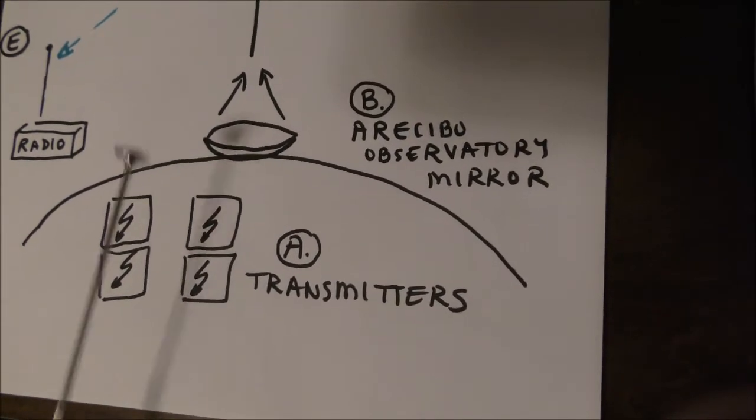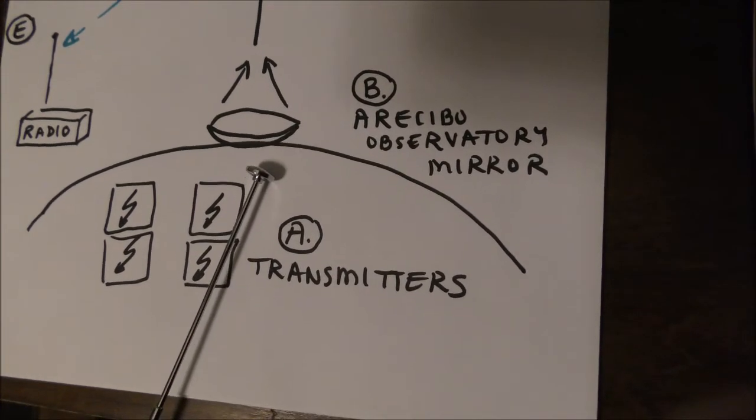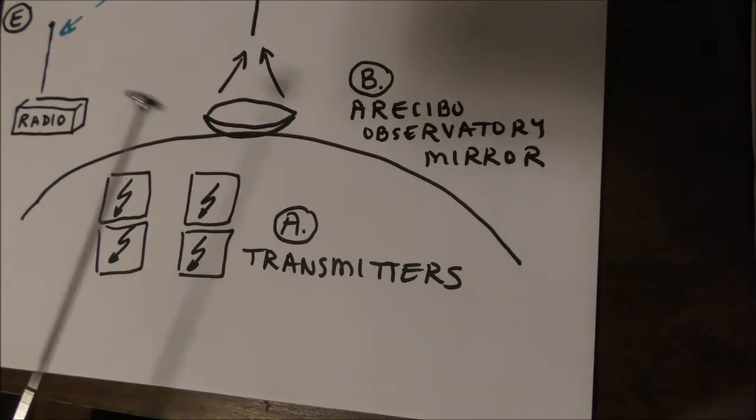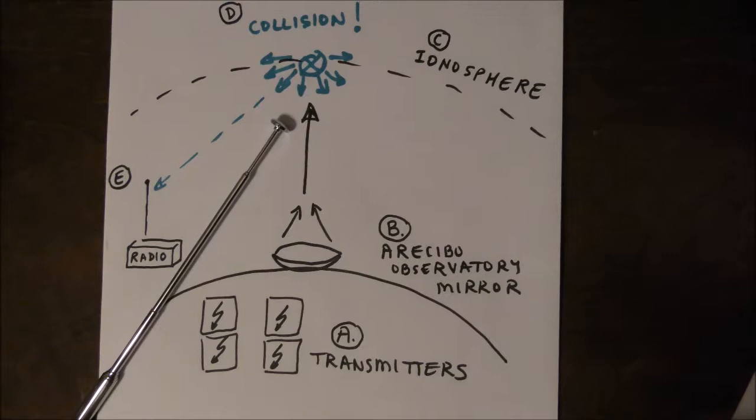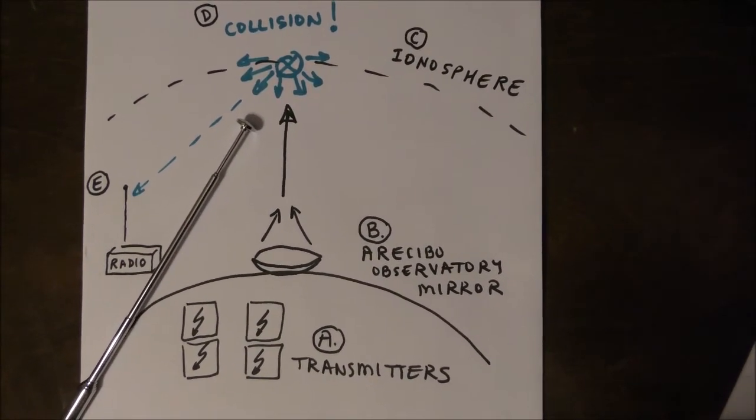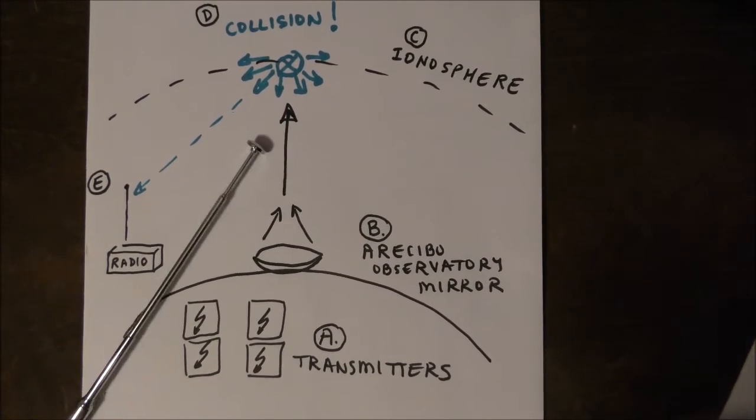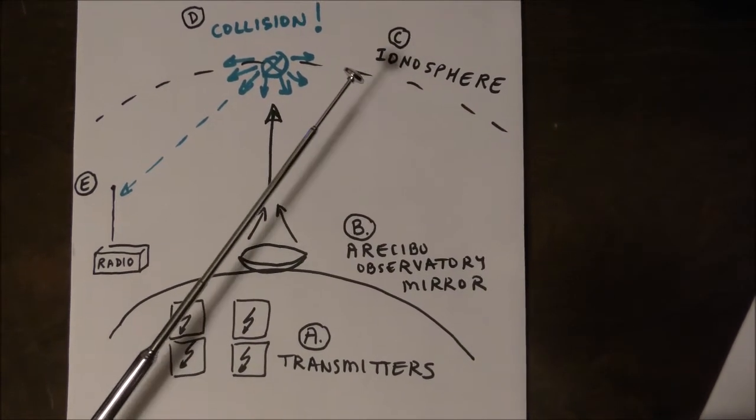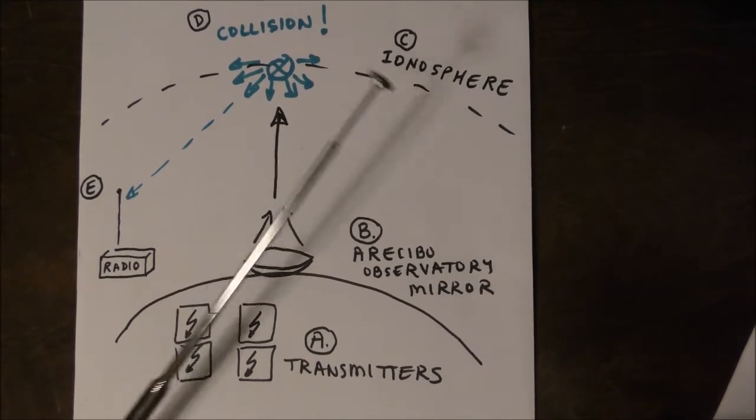Right above these transmitters, there's a big mirror carved into a mountain. That's the kind of mirror that large, world's biggest observatories use. The signal from these five transmitters is combined into an antenna in the middle of the mirror, and not only that, but the mirror is used to focus the signal into the ionosphere. The ionosphere is one of the layers of the atmosphere, and is the one that does not allow HF radio signals to pass through it. It reflects them back to Earth.